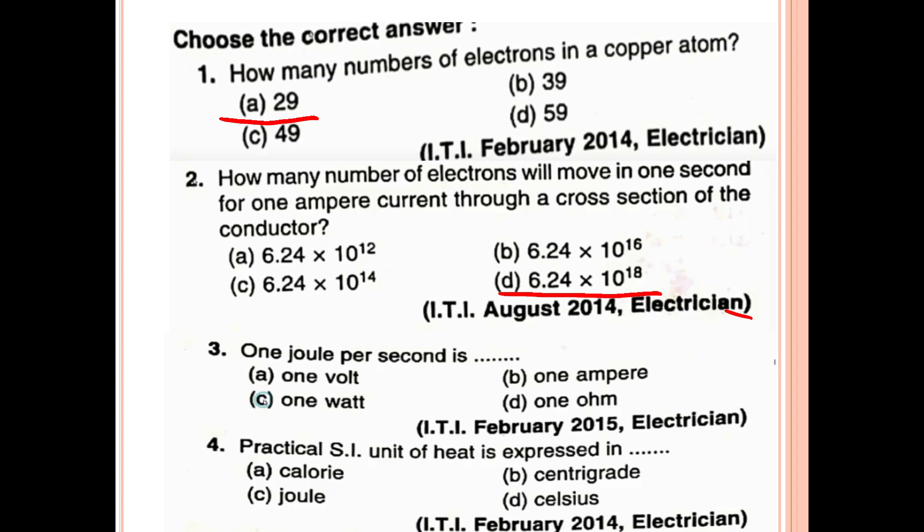Eighth question: One joule per second is dash. One joule per second is equal to 1 watt.